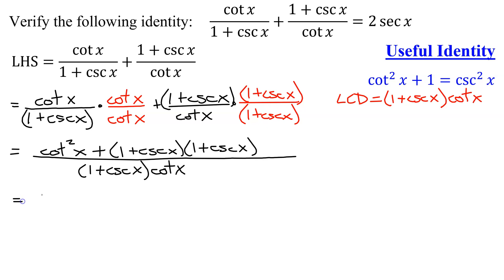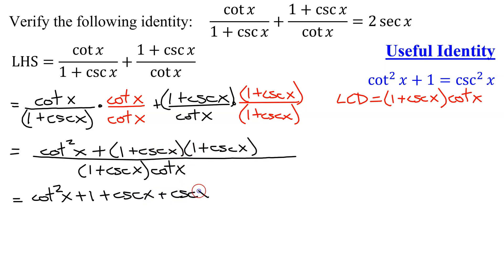Working on the numerator, I'm going to get cotangent squared x. Then I'll FOIL the two binomials — or use the squaring a binomial shortcut if you prefer. FOILing gives: first, 1 times 1 is 1; outer, 1 times cosecant of x is cosecant of x; inner, cosecant of x times 1 is cosecant of x; last, cosecant of x times cosecant of x is cosecant squared x.